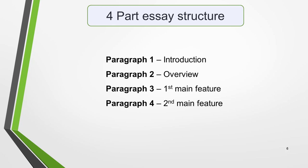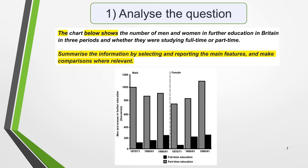We're now ready to work through the five-step planning process. First, analyse the question. The format of every question in Academic Writing Task 1 is the same. Here's a typical question. The highlighted words will always be the same no matter what type of question you get. The chart below shows the number of men and women in further education in Britain in three periods and whether they were studying full-time or part-time.